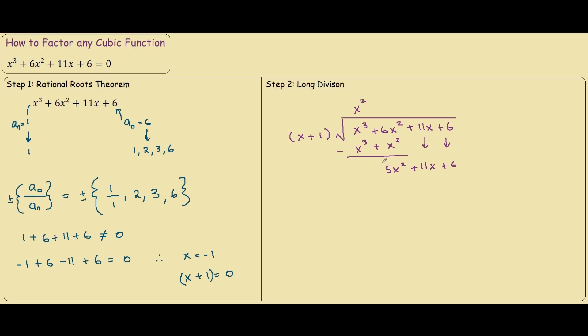Then bring these two down. Now, again, we look at this term, 5x squared. What do we need to multiply our x by, and it will be 5x. So, 5x times x plus 1 is 5x squared, plus 5x.